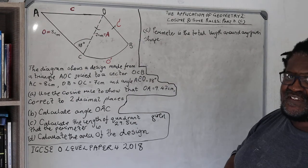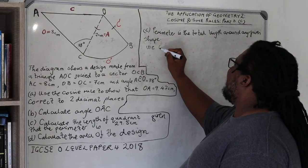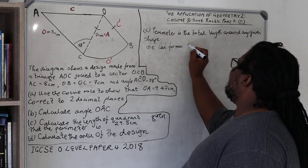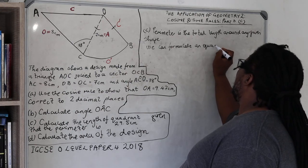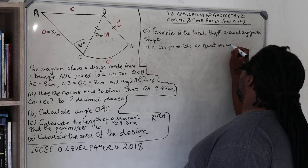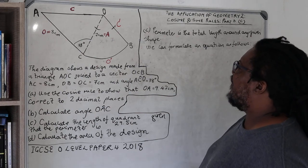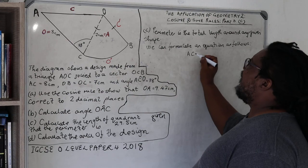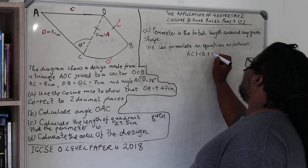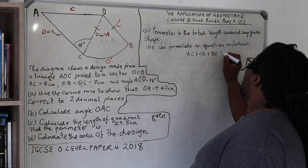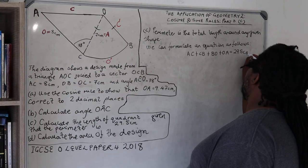With this in mind, we can formulate an equation as follows. AC plus CB plus BO plus OA is equal to 29.5 centimeters.